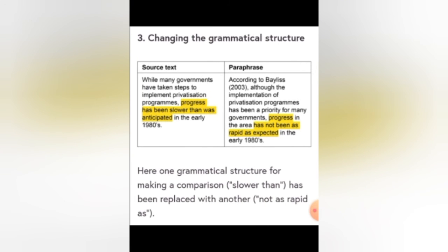The third technique is changing the grammatical structure. For example, the source text reads: 'While many governments have taken steps to implement privatization programs, progress has been slower than was anticipated in the early 1980s.' The paraphrase reads: 'Although the implementation of privatization programs have been a priority for many governments, progress in the area has not been as rapid as expected in the early 1980s.' The wording and grammatical structure have changed, but the sense remains the same.